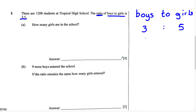Now, because we're comparing boys to girls, let's find the total number of parts that is in this problem. We can say total. We know there are 3 parts for the boys and 5 parts for the girls, so we can just add these two. And we're going to get 8 parts. So the total number of parts is going to be 8.